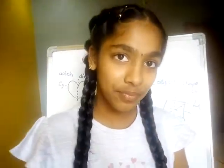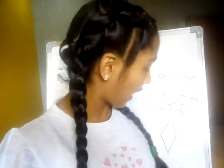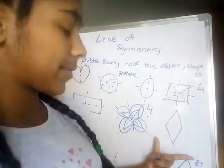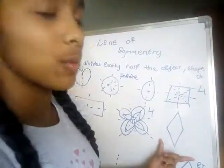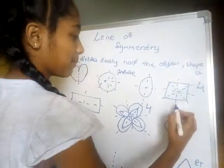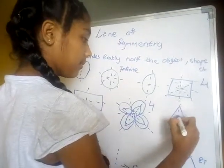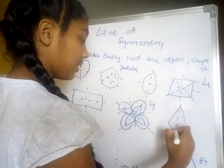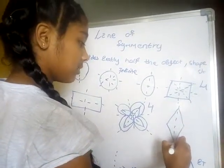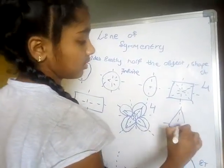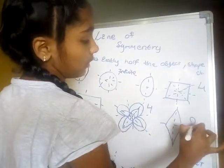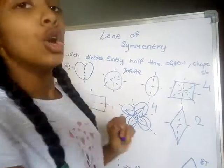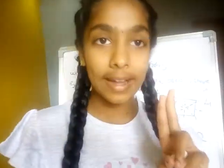Next we have a diamond shape. For diamond, we have only two lines of symmetry.